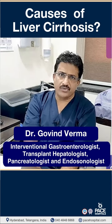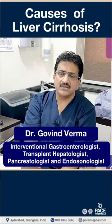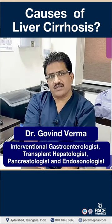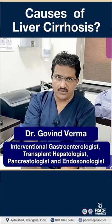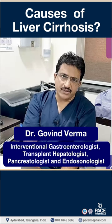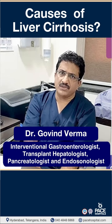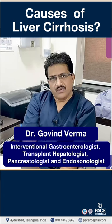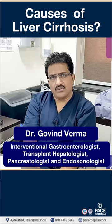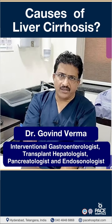Uncommon causes include drug-induced toxins, heavy metals, and autoimmune liver diseases like autoimmune hepatitis leading to cirrhosis of the liver. There can also be genetic or metabolic disorders, which are common in childhood — such as Wilson's disease due to copper overload, and alpha-1 antitrypsin deficiency.